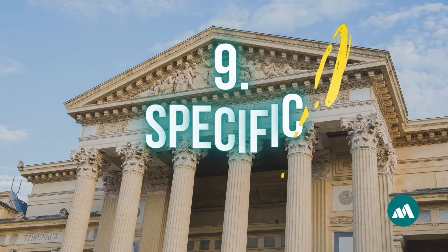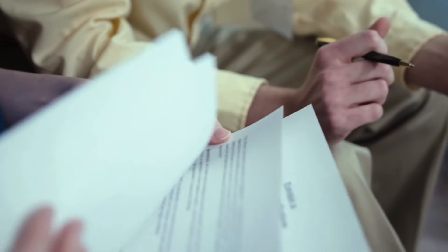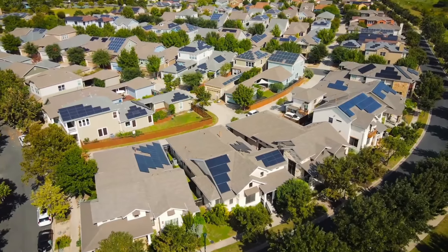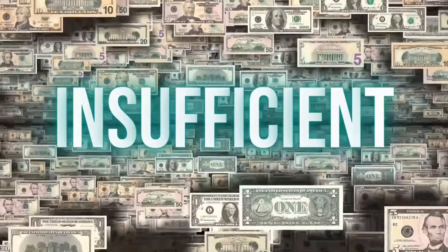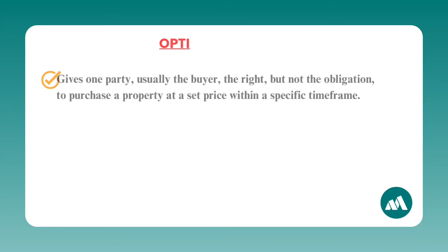Number nine: specific performance. In contract law, specific performance is a legal remedy in real estate transactions where a court orders the breaching party to fulfill their contract obligations rather than simply paying monetary damages. This is commonly found in real estate because each piece of property is unique, making monetary compensation insufficient. For example, if a seller tries to back out of a signed sales contract, the buyer might sue for specific performance to force the sale of the property.